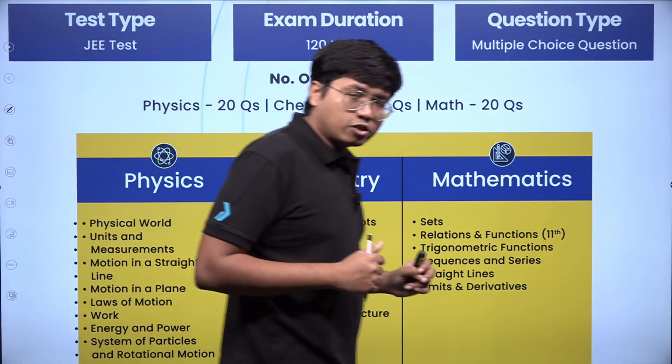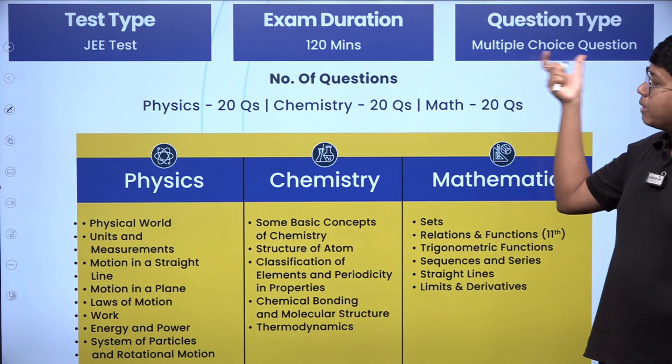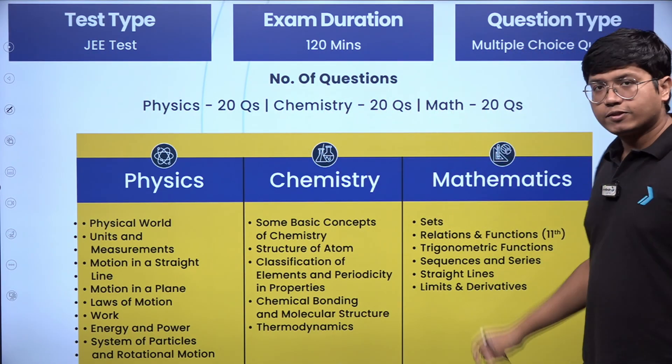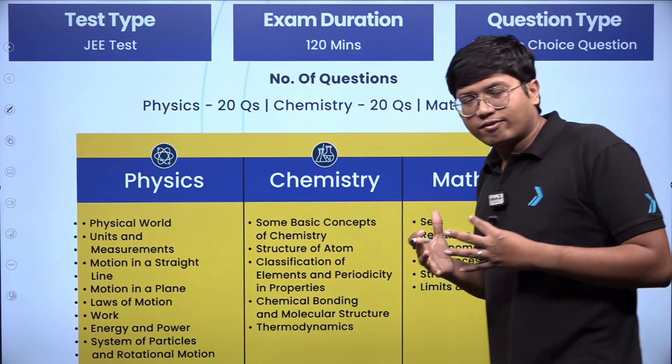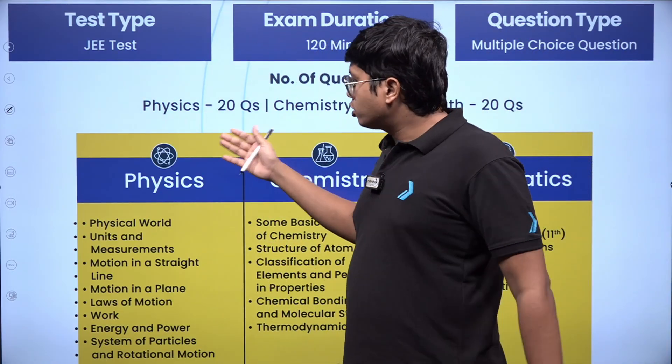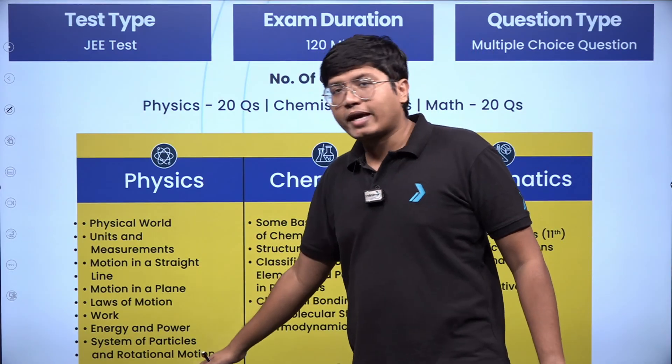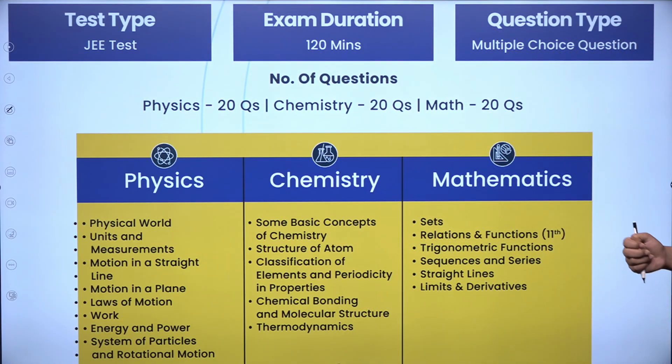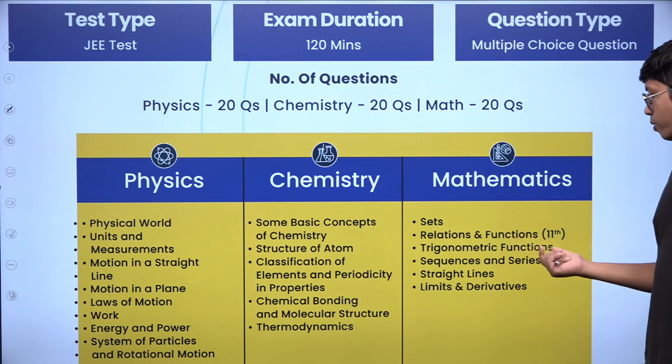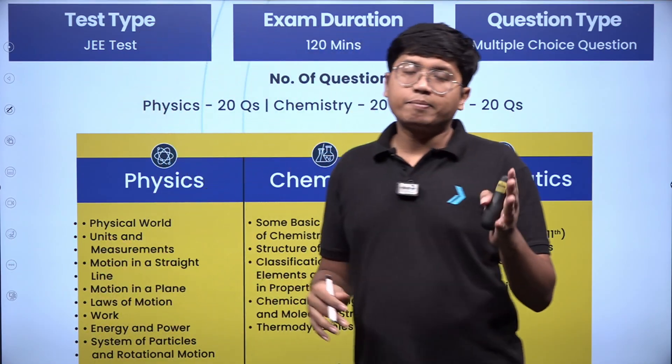This is your syllabus and exam details: it would be of 120 minutes. So it would be a 2-hour exam. Each section will have multiple choice questions and 20 questions in each—Physics, Chemistry, and Maths. So 60 questions, 120 minutes. You have 2 minutes per question. But as you can see, the questions are not that difficult which will consume 3-4 minutes of time. Also, this is your syllabus. You see, it is not the full 11th syllabus, not the full 12th syllabus. In Physics, it is only the Mechanics part, till Rotational Motion. In Chemistry, your basic concepts, structure of atom, classification, chemical bonding, and thermodynamics. Maths has sets, relations, functions, trigonometric functions, sequence series, straight lines, limits and derivatives. This will be the syllabus. Exam is on 28th September and 12th October, whichever slot you get.